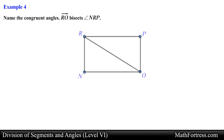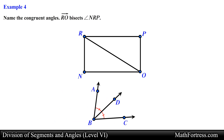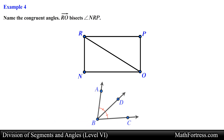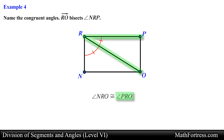Let's take a look at the next example: Name the congruent angles — Ray RO bisects angle NRP. In this problem we are asked to name the congruent angles given that Ray RO bisects angle NRP. Recall that an angle bisector will split an angle into two congruent angles. Since Ray RO bisects angle NRP, it splits it into two congruent angles. In this case angle NRO is congruent to angle PRO, and this is our final answer.